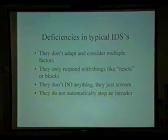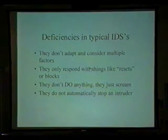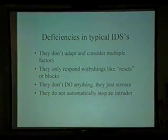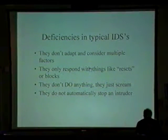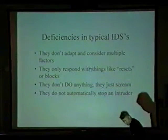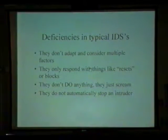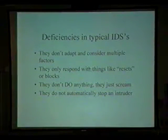Deficiencies of typical IDSs: they do not adapt and consider multiple factors; they only respond with things like resets or blocks; they don't do anything, they just scream; and they do not automatically stop an intruder. One of the largest things I've heard here is automated attack — well, why not automated defense? Instead of just dropping a packet, what if suddenly I start logging, let the intruder think they've got in, and reroute them dynamically to a honeypot as they're attacking my IIS server? That's one kind of dynamic response you can do. With the AI technology that we have, with all the clever hacks I'm seeing, why can't we have clever responses?